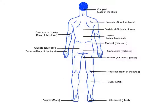Number ten: the left and right gluteal regions are? The answer is contralateral. Number eleven: the dorsum, the back of the hand, is blank to the olecranal, the back of the elbow. The answer is distal. And lastly, number twelve: the right calcaneal and right scapular regions are? The answer is ipsilateral.